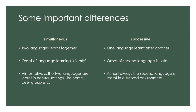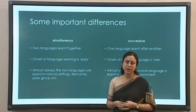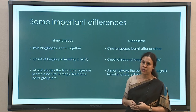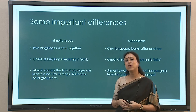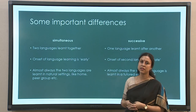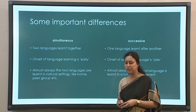In simultaneous bilingualism two languages are learned together; in successive, one after another. As a result, you can predict that the onset of both languages will be very early in simultaneous cases, as opposed to successive where the second language enters the system a little later. Almost always, the two languages are learned in a natural setting in simultaneous bilingualism — both languages are present in the environment, making it possible for the child to acquire both together. In successive bilingualism, the second language is more often than not tutored — taught in a school setting, where a toddler starting school at age 3 begins learning another language which is the medium of instruction.